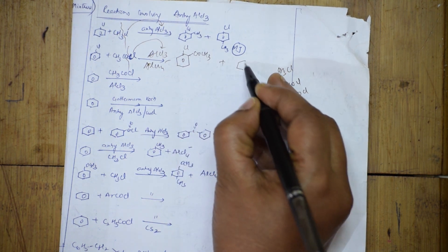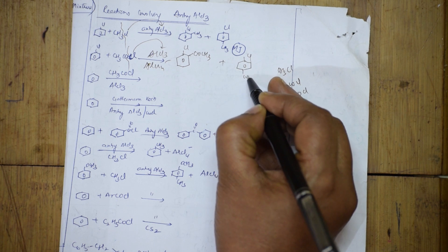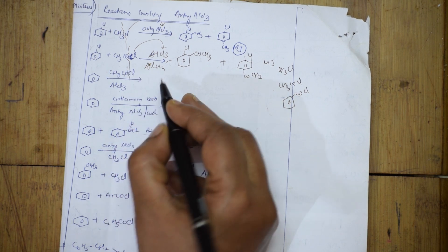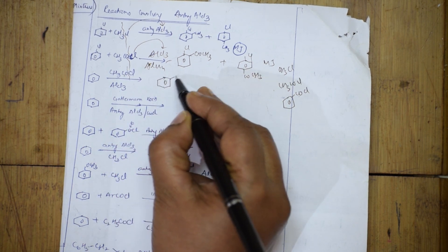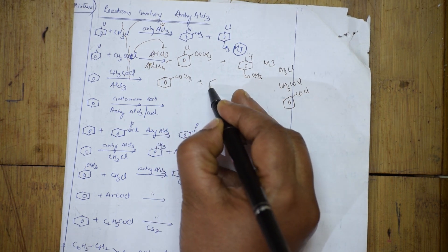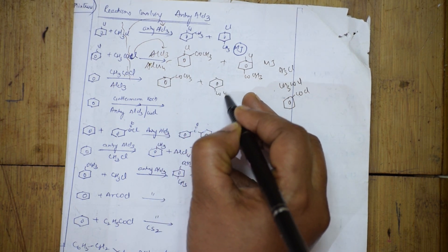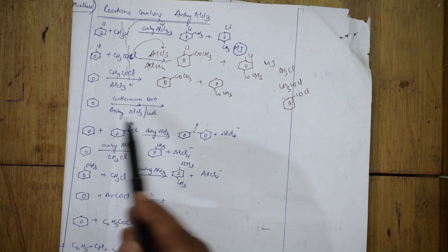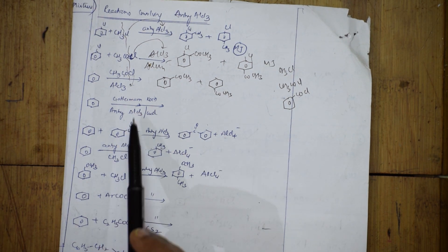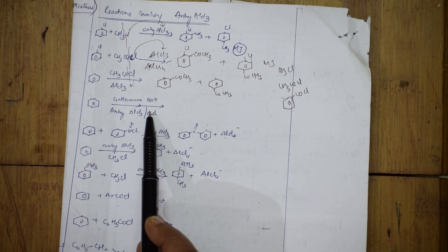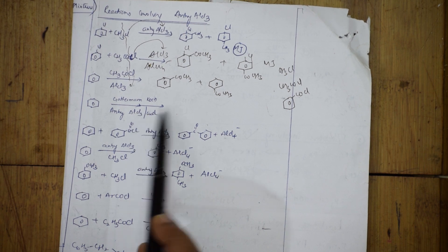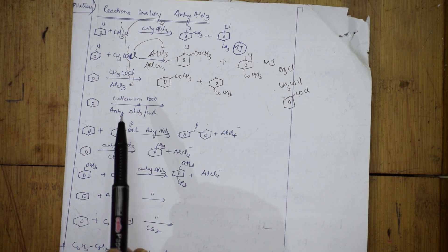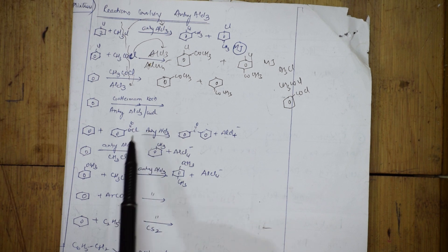You get the ring substituted with COCH₃ at ortho and para positions, with para as the major product. Similarly, acetyl chloride with AlCl₃ gives the benzene ring with COCH₃ at ortho and para positions — same concept everywhere: break the bond, AlCl₃ picks up Cl⁻. For Gattermann-Koch synthesis with anhydrous AlCl₃, watch the dedicated video for the mechanism.